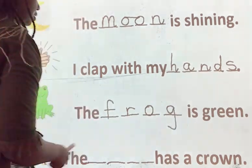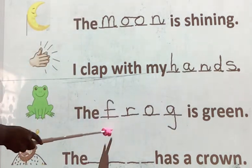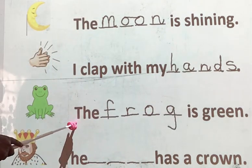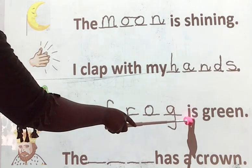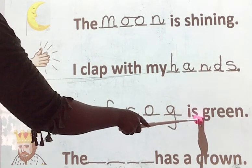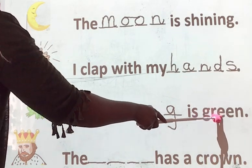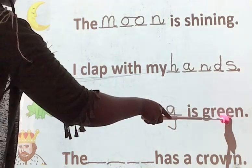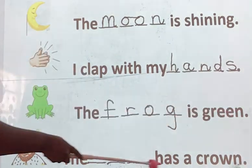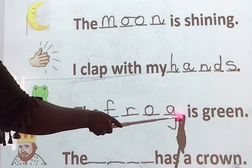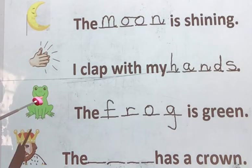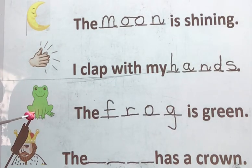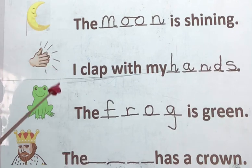G. Very good. The frog is green. Green. The frog is green. Is the frog green? What's the colour of the frog? Green. Yay! Good job.